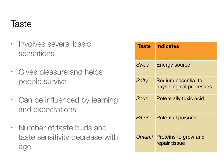Sour and bitter can indicate things that are potentially toxic, so we have to adapt to liking them — they're not something we immediately enjoy. Very few people who try black coffee the first time think it's delicious. Your body is saying, are you sure about this? This could be potentially poisonous. So we have to adapt and learn that it's not poisonous — it's delicious, especially with sweeteners and creamers. Umami really tells us about protein sources and gives information that allows our body to repair itself.